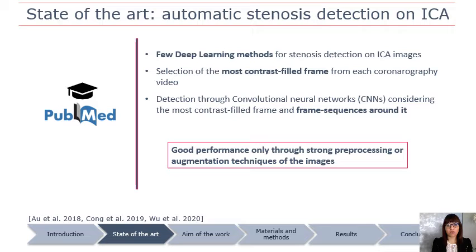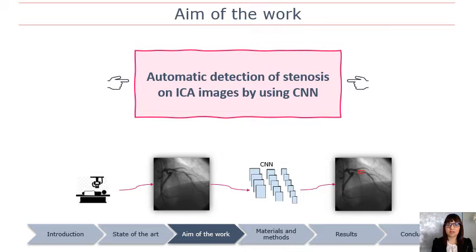Generally, these studies obtain good performance in terms of detection, but to be effective they apply strong pre-processing on the images, enhancing the visibility of the stenosis and the image quality — so their good results are unfeasible in clinical practice. For this reason, this work investigates the possibility of obtaining stenosis detection on ICA images without enhancing image quality, through the use of an object detection network.